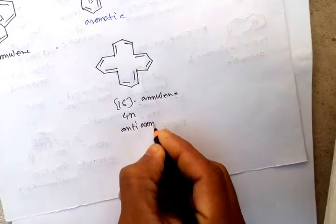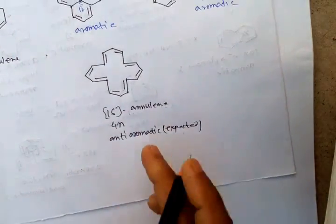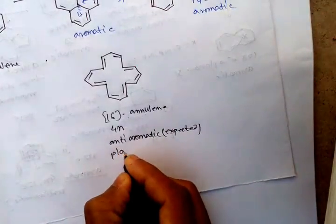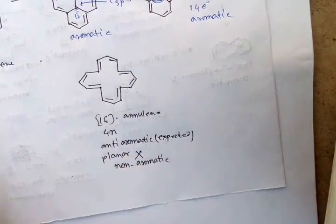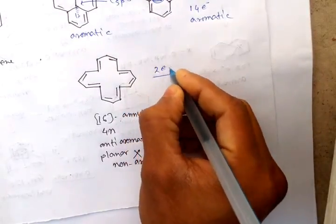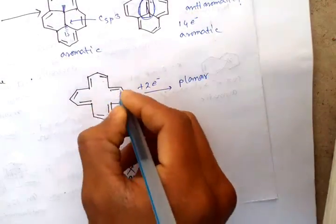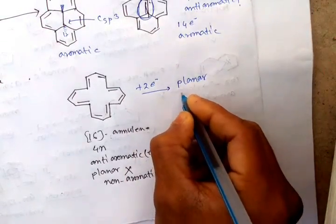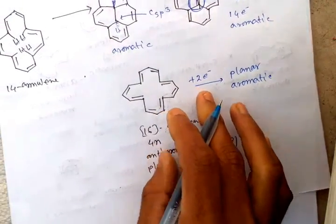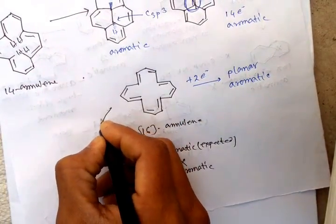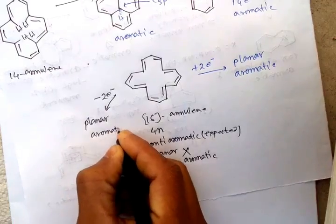The next system is expected to be anti-aromatic, but it is not a planar structure — this overall system is non-planar, so it is non-aromatic. If we add two electrons into the system, then it becomes a planar structure with enough conjugation and 4n+2 number of electrons, making it aromatic. Similarly, if we remove two electrons, it also becomes a planar aromatic compound.